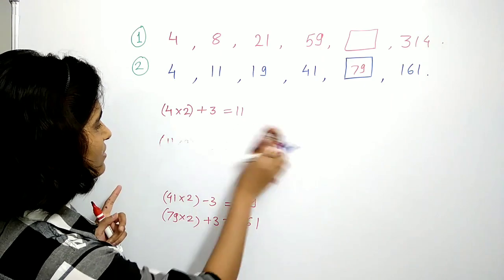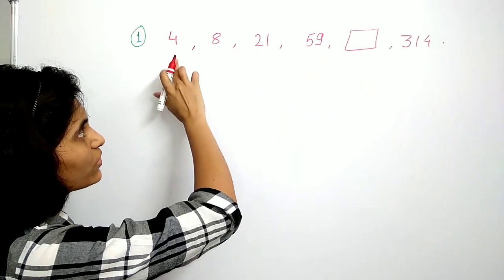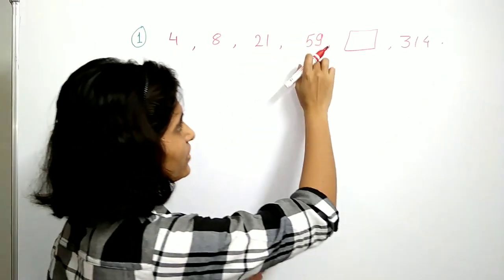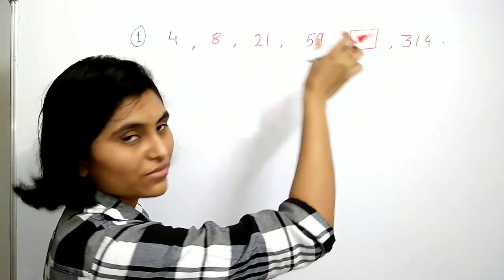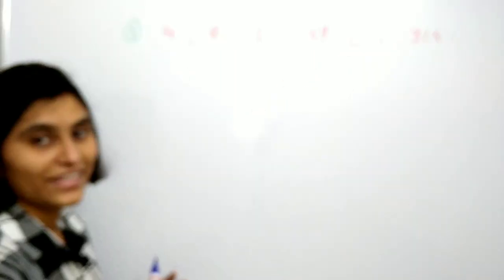This is somewhat tricky. It is a sequence of numbers starting with 4, then 8, 21, 59, and we want to find out the missing number, and last it is 314. Let me tell you the logic behind this.